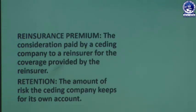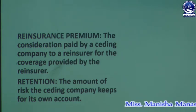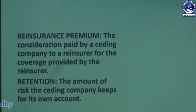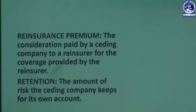Reinsurance premium is the amount paid by the original insurer to the reinsurer for undertaking the risk — it is the consideration paid by a seeding company to a reinsurer for the coverage provided. Retention is the amount of risk kept by the original insurer for its own account — in my example, the 20 lakh rupees kept by ABC Limited is known as the retention amount.